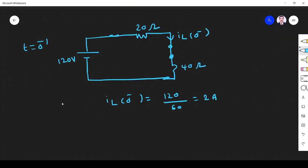We know that the inductor will not change the current immediately. So IL(0-) is equal to IL(0+). That is equal to 2 amps.